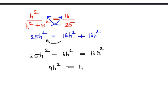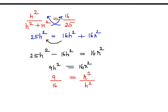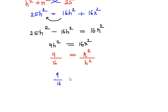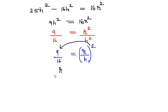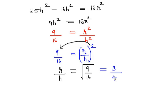The question asks for the ratio of radius to height. Rearranging, we get 9/16 = r²/h², which can be written as (r/h)² = 9/16. Taking the square root of both sides, r/h = √(9/16) = 3/4. So the ratio of the radius of the base to its height is 3:4.